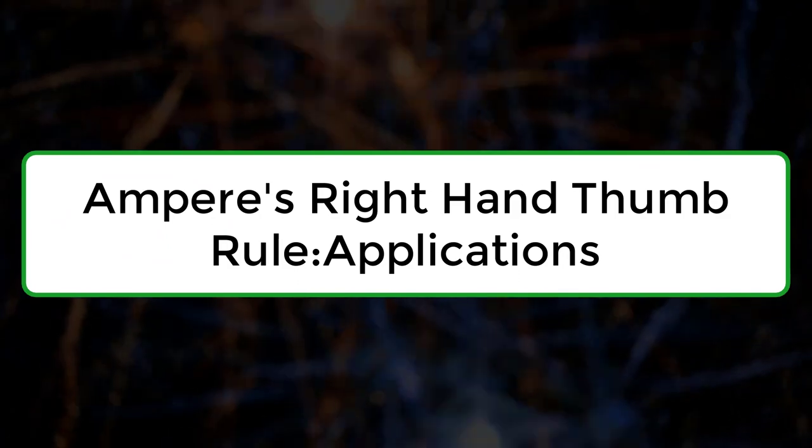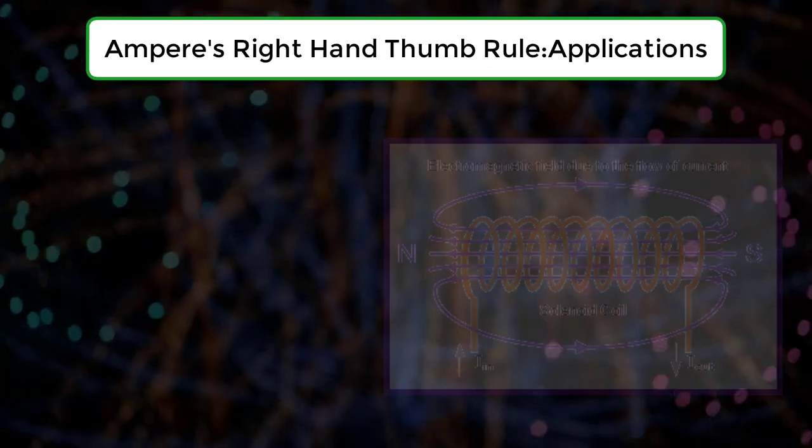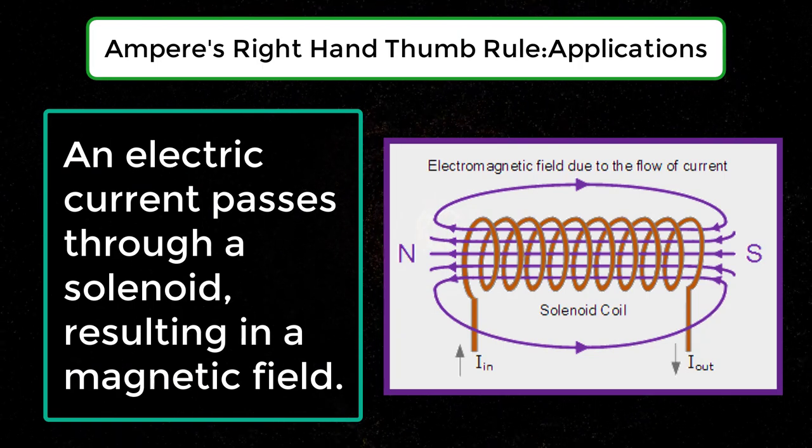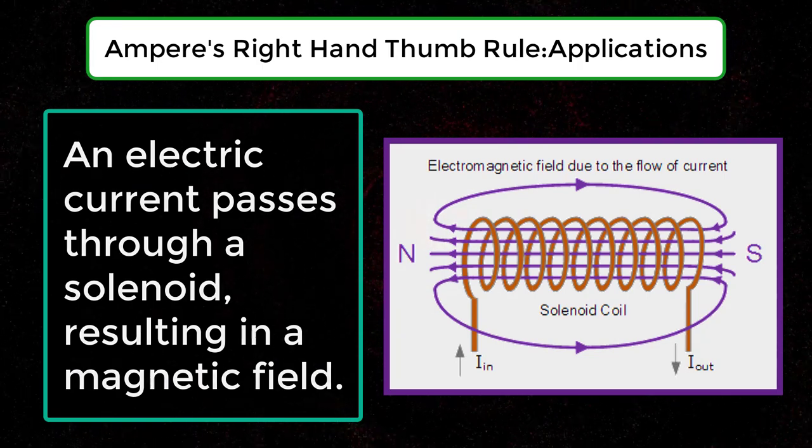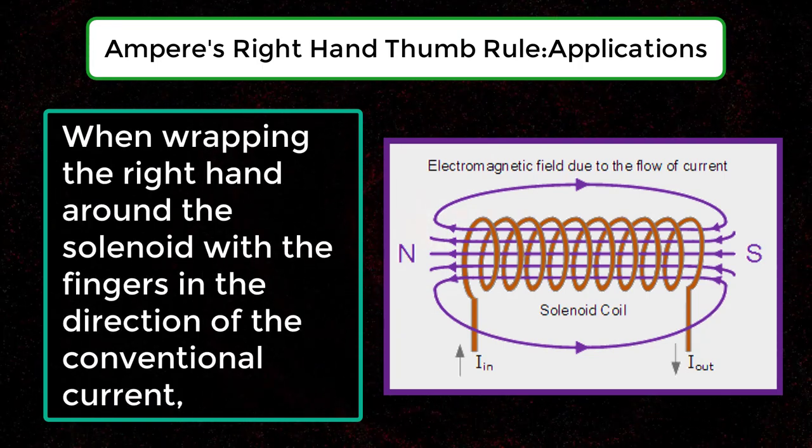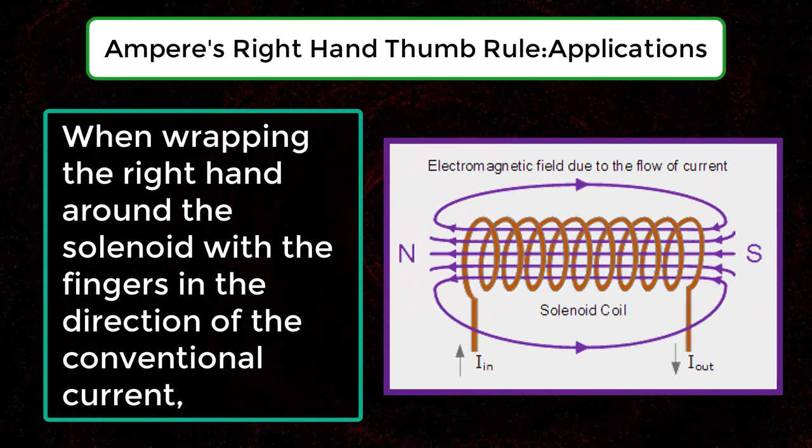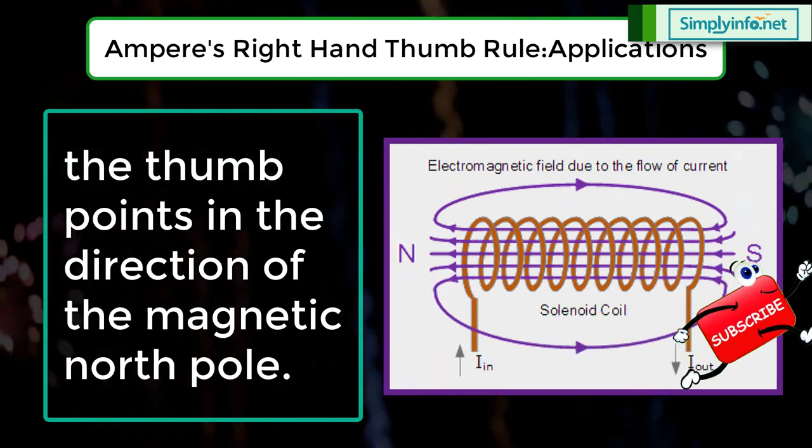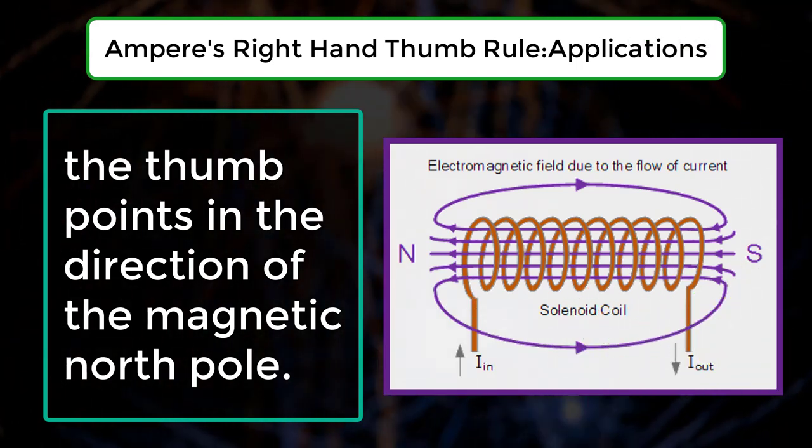Ampere's Right Hand Thumb Rule Applications: An electric current passes through a solenoid resulting in a magnetic field. When wrapping the right hand around the solenoid with the fingers in the direction of the conventional current, the thumb points in the direction of the magnetic north pole.